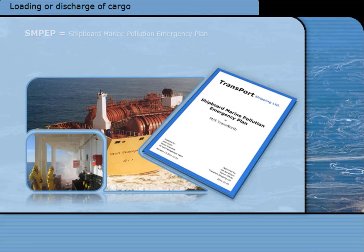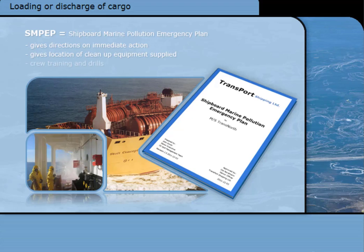All ships carrying noxious liquid substances are required to have a Shipboard Marine Pollution Emergency Plan (SMPEP), which will provide directions on the immediate action to take following a leak or overflow during cargo operations. On most ships, special clean-up equipment will have been supplied, and its location recorded in the plan. The crew should have carried out training and drills to improve crew response to a spill.